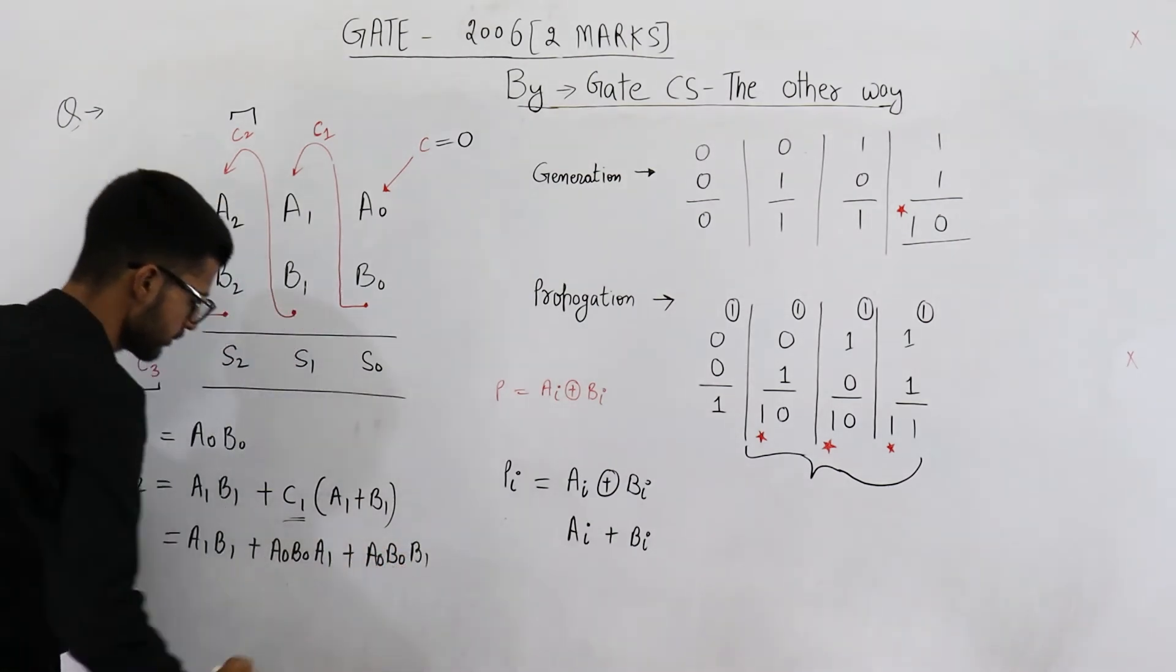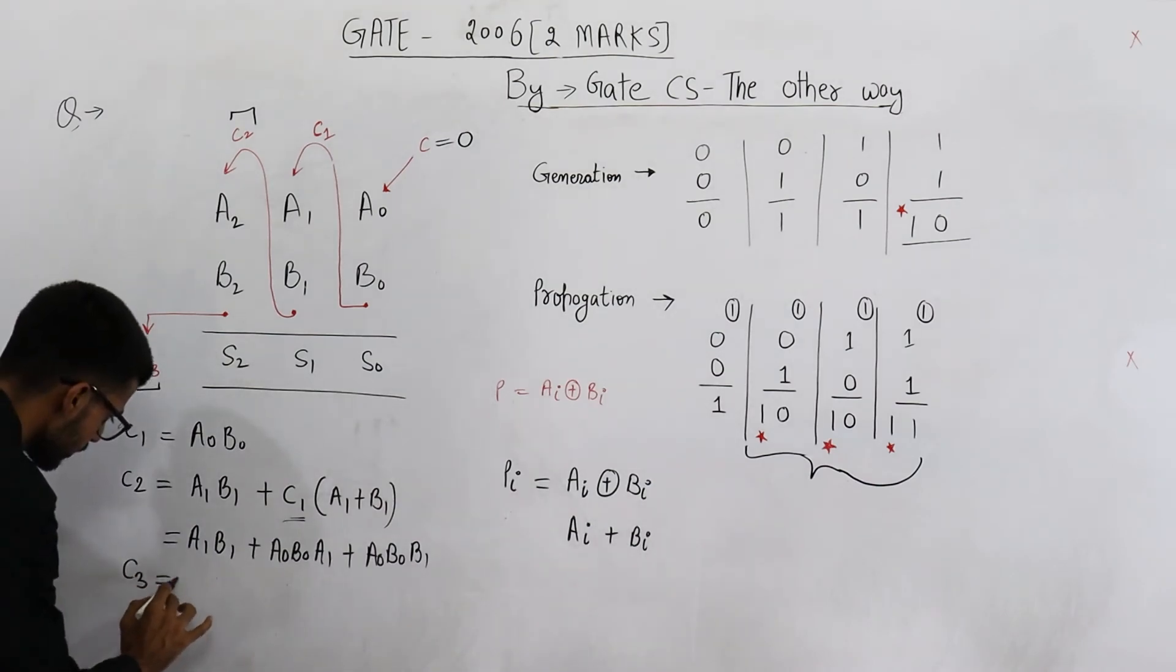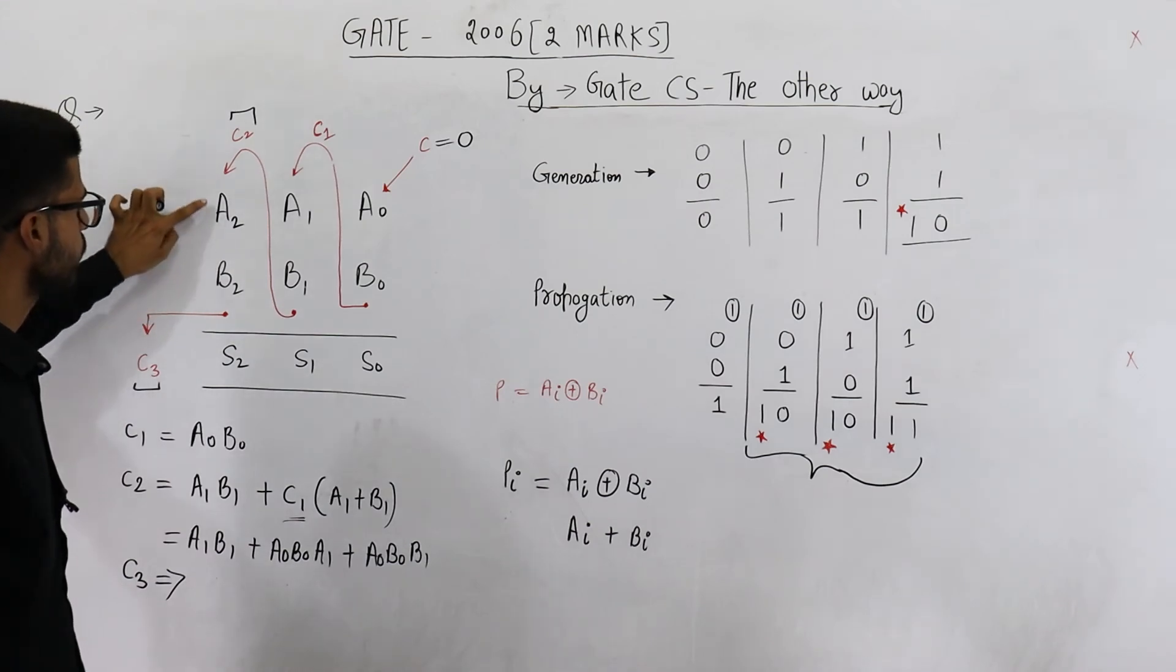So now I am substituting the value of C1. We have already calculated C1 is A naught B naught. So this comes out to be A1 B1 plus A naught B naught A1 plus A naught B naught B1.